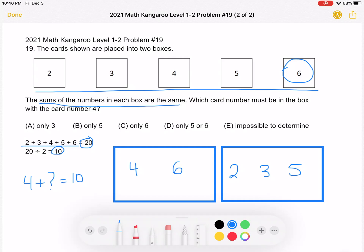So, we have our answer. The card number that must be in the box with 4 is 6, and that is answer choice C.